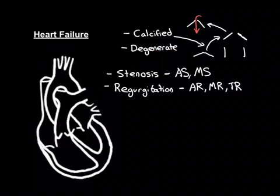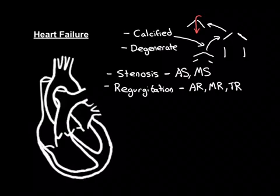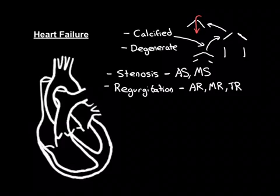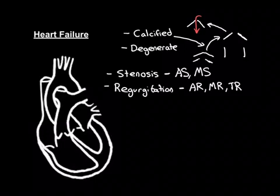Degeneration can also lead to regurgitation of the valves. If the leaflets have become too small, there's no way they can close the gap, so you're going to get regurgitation. If the leaflets get smaller because of degeneration, you're no longer going to be able to close the gap with those leaflets, and therefore you will get regurgitation.